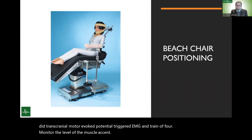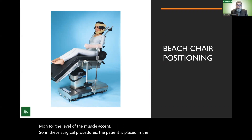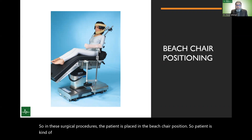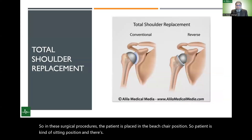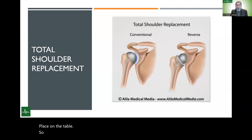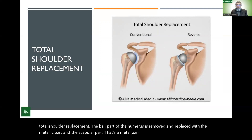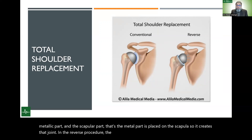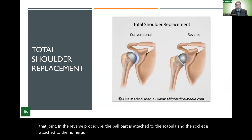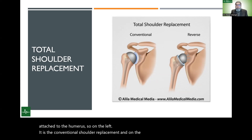In these surgical procedures, the patient is placed in a beach chair position — the patient is in a kind of sitting position on the table. In the conventional method, during a total shoulder replacement, the ball part of the humerus is removed and replaced with a metallic part, and a metal part is placed on the scapula to create the joint. On the left side is the conventional shoulder replacement, and on the right side is the reverse shoulder replacement.